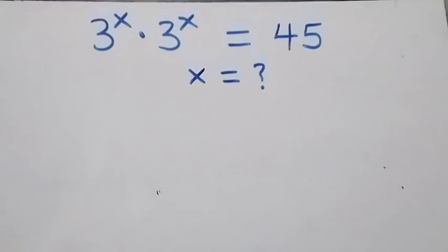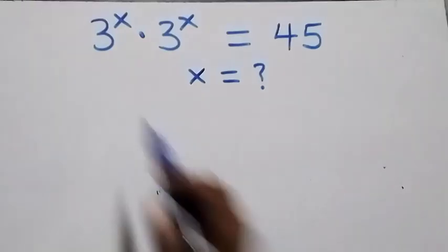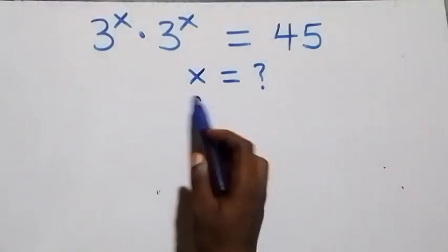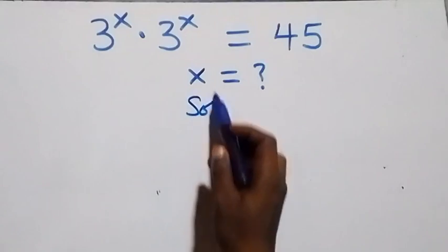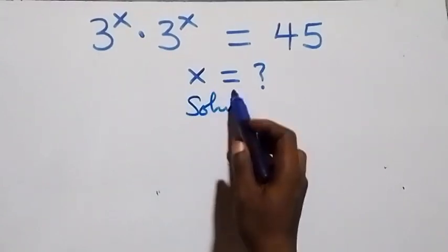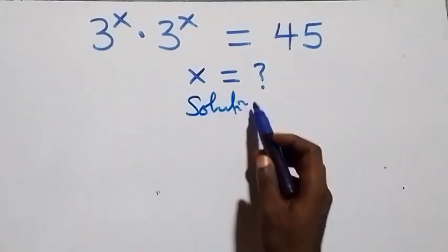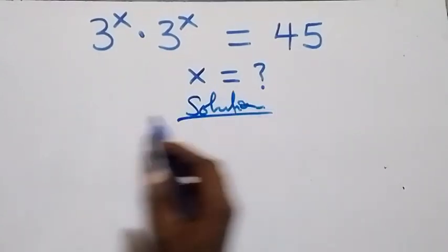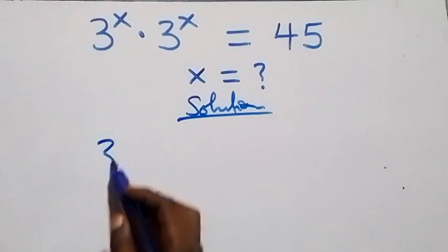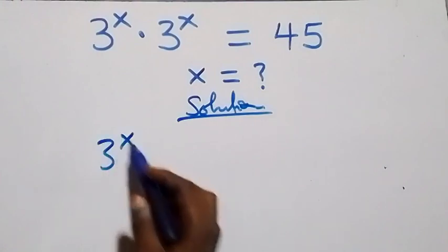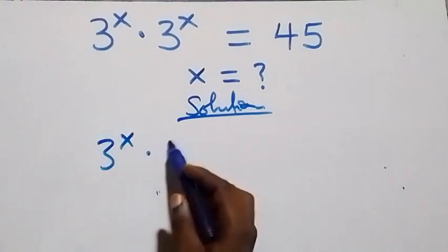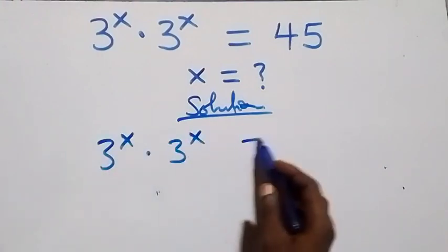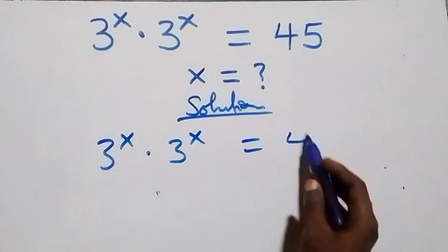Hello, you're welcome. How to solve this nice exponential equation. From what we have here, which is three raised to power x times three raised to power x equals to forty-five.